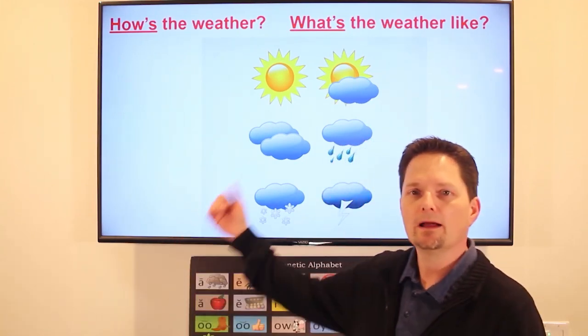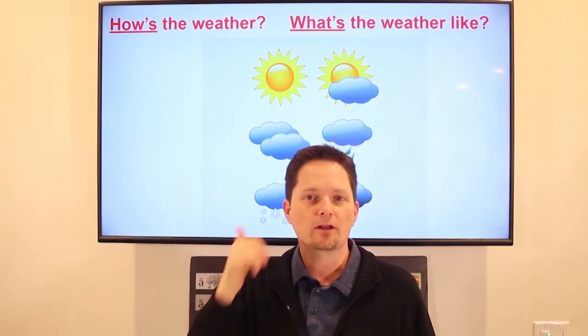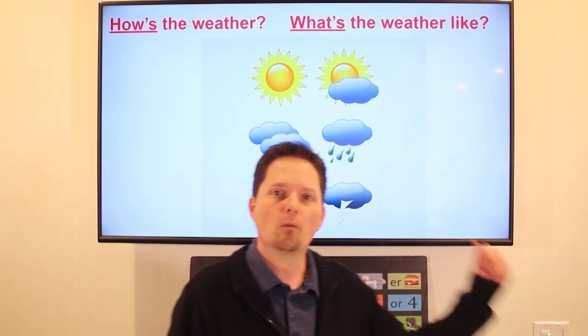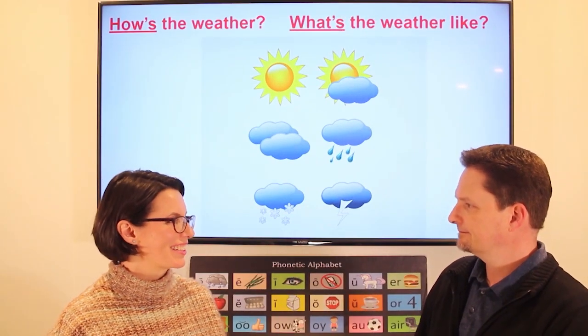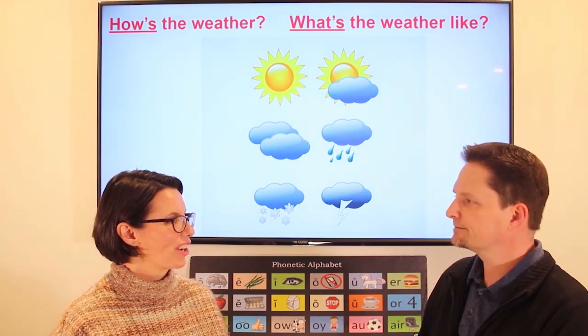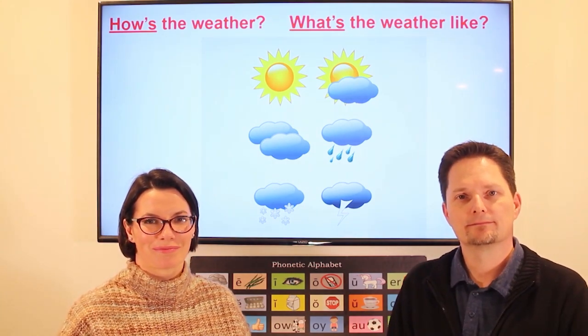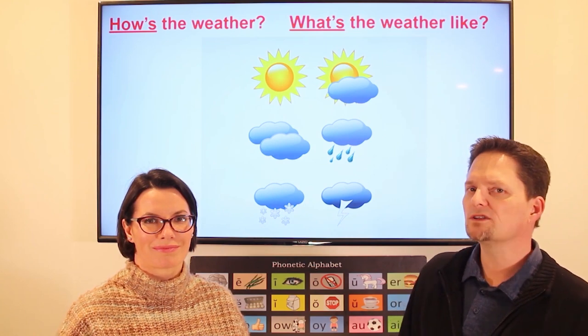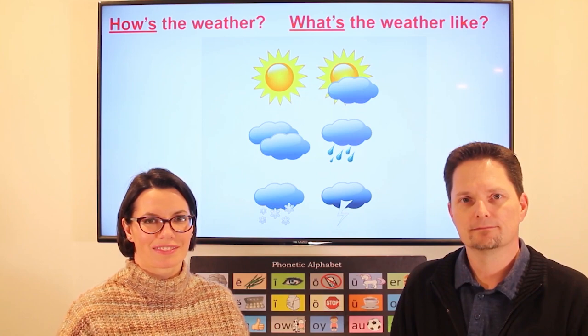Let's talk about the difference between 'How's the weather' and 'What's the weather like.' 'How's the weather' is what you say to a friend on the street or on the phone: 'How's the weather today?' And 'What's the weather like' is for a specific place: 'What's the weather like in your country?' It's very cold — it snows every winter.